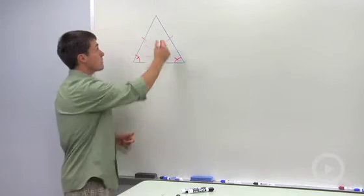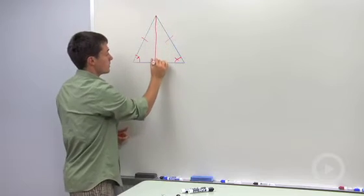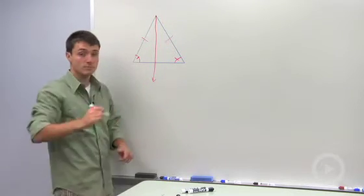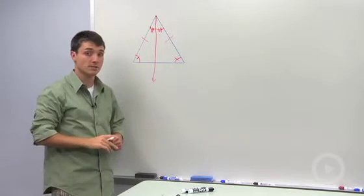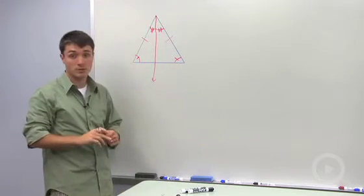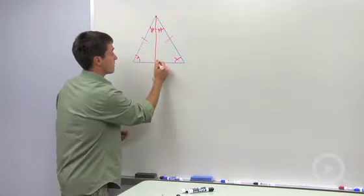And that is if we draw in an angle bisector. So if I bisect the vertex angle of that isosceles triangle, then what we've done is we've created two special types of segments.